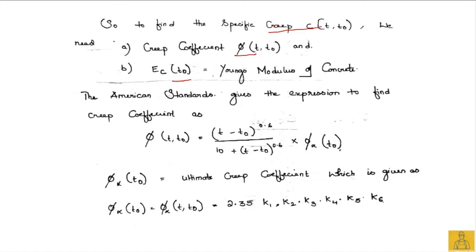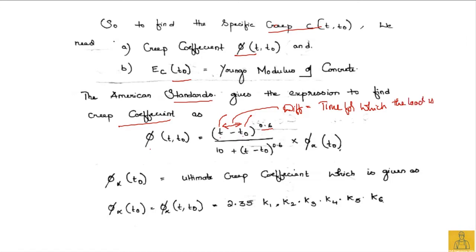The American Standard gives an expression for the creep coefficient: φ(t, t-naught) = [(t − t-naught)^0.6 / (10 + (t − t-naught)^0.6)] × φ∞(t-naught). The term t minus t-naught represents the duration of time for which the load has been on the concrete.